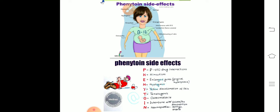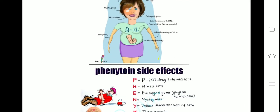T - teratogenic, O - osteomalacia, I - interferes with the folate or B12 absorption, N - that causes neuropathies that cause vertigo that cause ataxia. Now the side effects of phenytoin you remember by the word itself, that is PHENYTOIN.